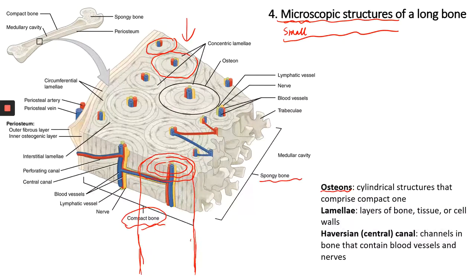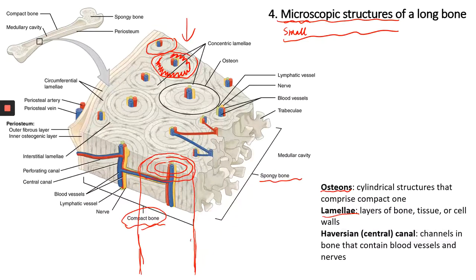The second structure, which is part of the osteon, is called lamellae. Lamellae is plural — these are layers of bone matrix within each osteon. For example, one layer of bone matrix is called a lamella (singular). When you look at multiple layers, that's lamellae.